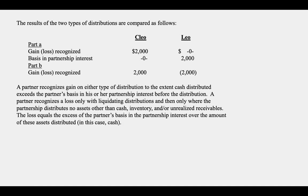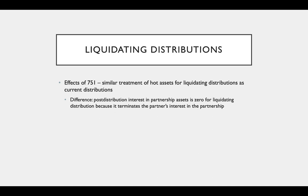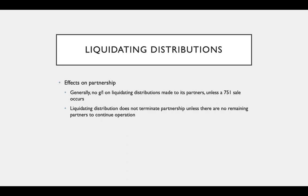We also have to worry about Section 751 hot assets when discussing liquidating distributions. If we have Section 751 assets, they receive similar treatment for liquidating distributions as they did for current distributions, but the difference is that there's no post-distribution interest in partnership assets because the partner is no longer a partner. Generally there's no gain or loss on a liquidating distribution made to the partners unless we have a 751 sale. A liquidating distribution does not terminate the partnership unless there are no remaining partners to continue operations — one partner can leave without termination.